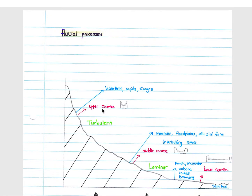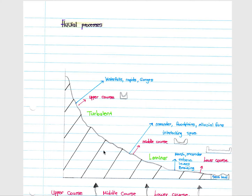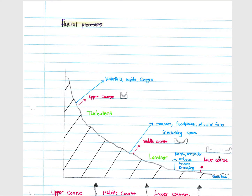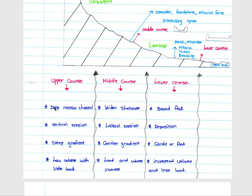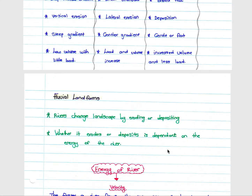In the upper course there is very turbulent flow due to the steep gradient, and we get waterfalls, rapids, and gorges with a deep, V-shaped river channel. In the middle course there is more laminar flow with meanders, floodplains, alluvial fans, and interlocking spurs, with a shallower and wider channel. In the lower course we find marshes, meanders, oxbow lakes, levees, and braiding, with a much wider and shallower channel.